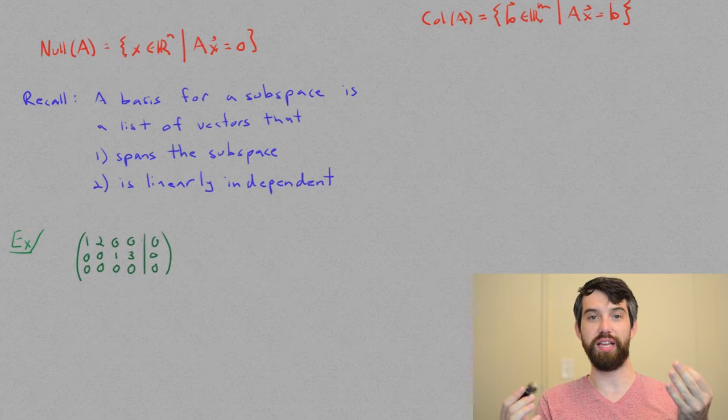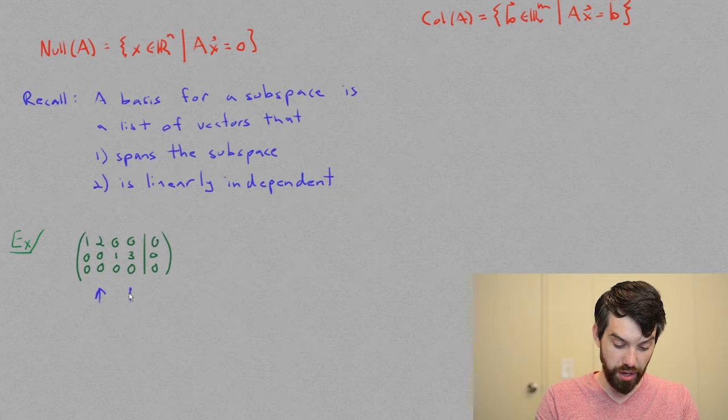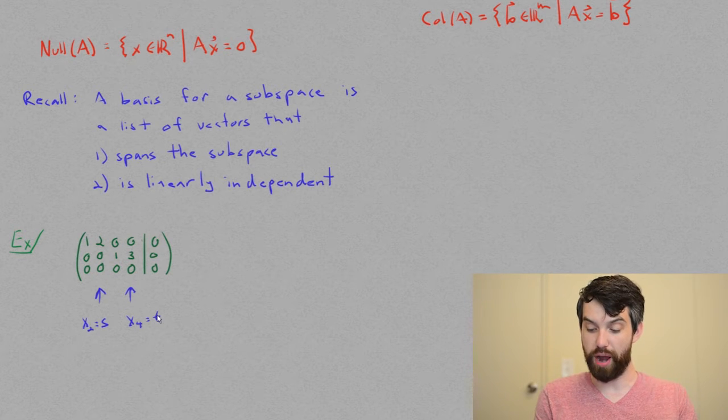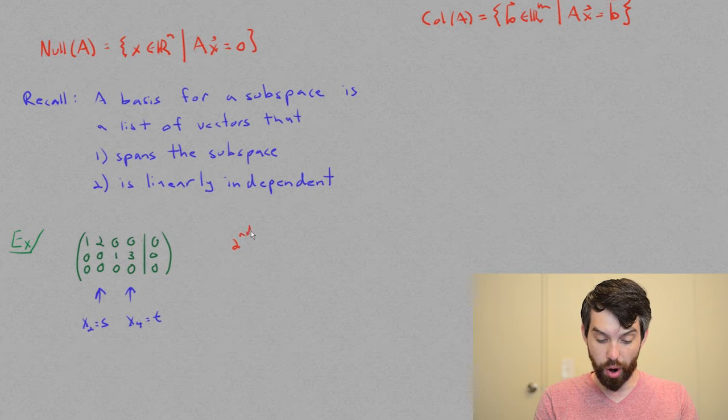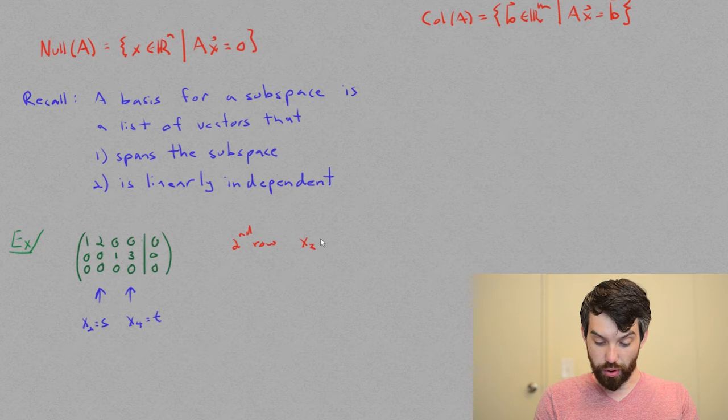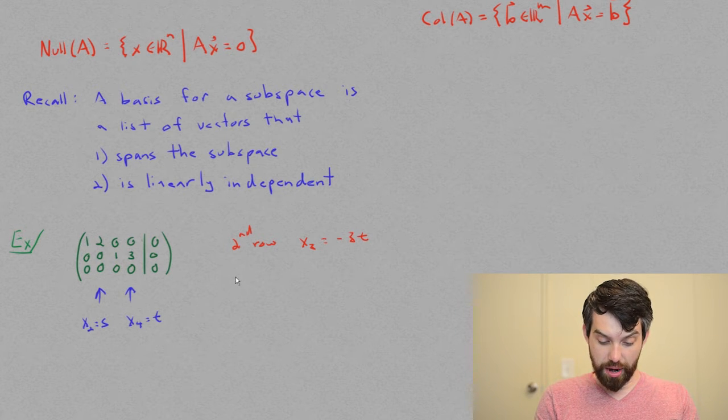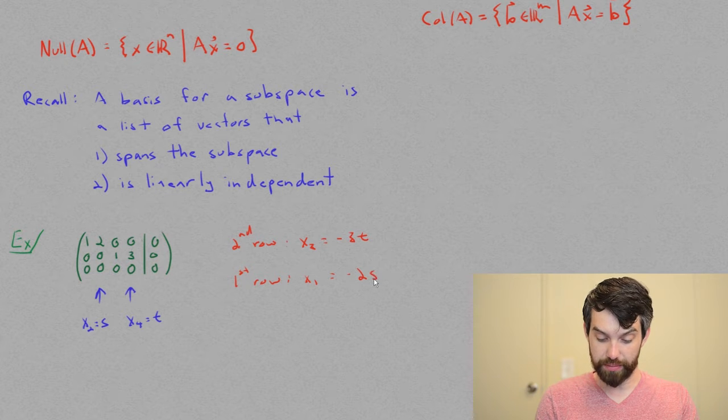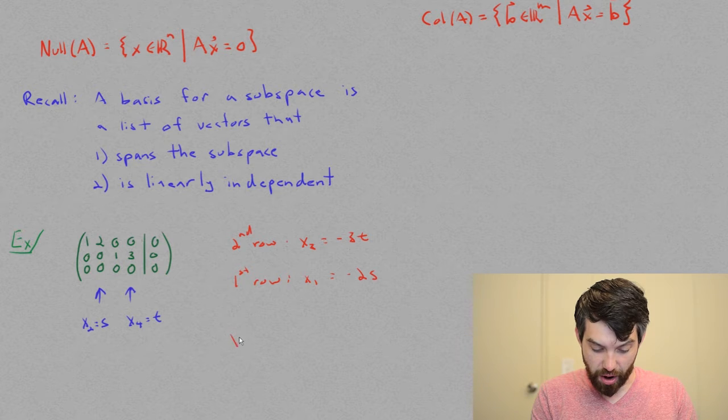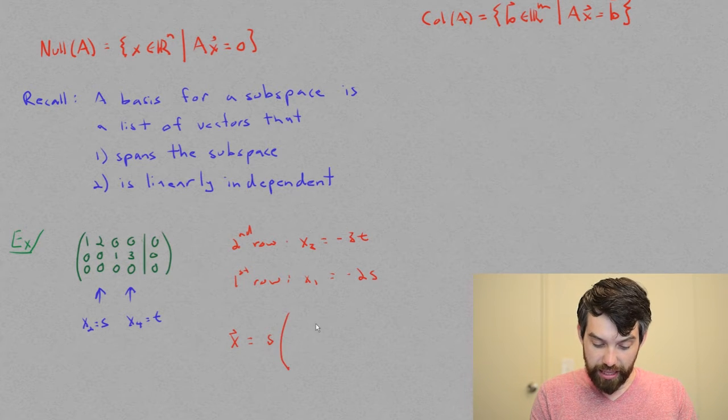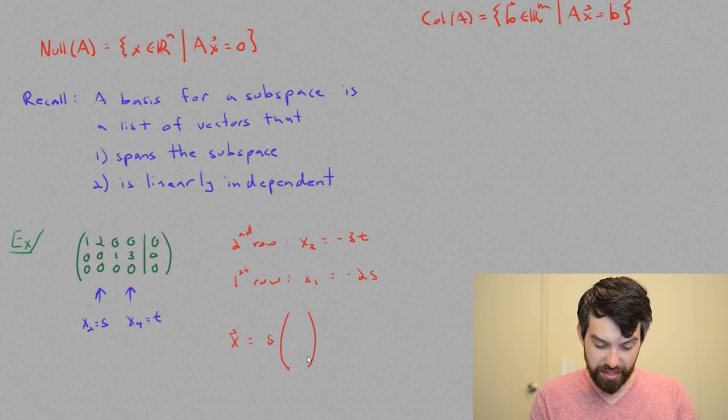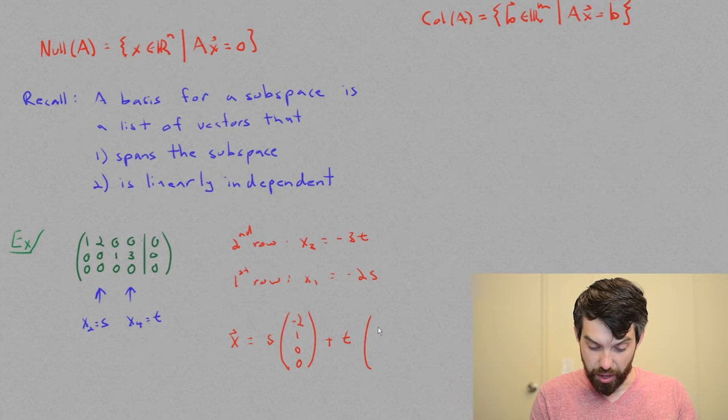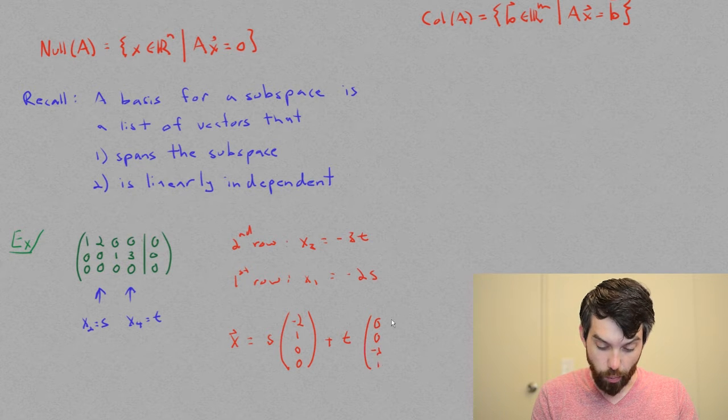We should know how to go about solving these kind of systems. We see that we have these two different free columns, which allows us to specify that x2 is s and x4 is t. These are our free parameters. Reading off of the second row, x3 is equal to minus 3 times t. Reading off of the first row, x1 is equal to minus 2 times s. Finally, we write our vector x as a linear combination where we first look at all the things with s's: minus 2, 1, 0, 0, and then add all the things with t's: 0, 0, minus 3, and 1.